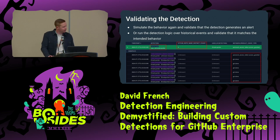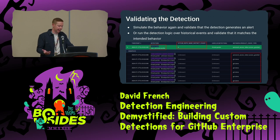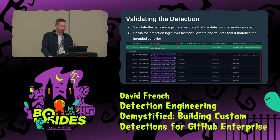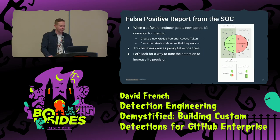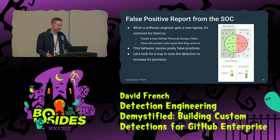Now we've written the first version of our detection rule, we should test it. We can either run our detection logic over the events we generated earlier or simulate the attacker behavior again. In this example, we can see a user created a personal access token and then cloned six distinct private GitHub repos — our initial detection logic works. After testing, we handed it over to our SOC analysts, and after a week or so they told us it's generating false positives, taking up their precious time. So we need to fix that.